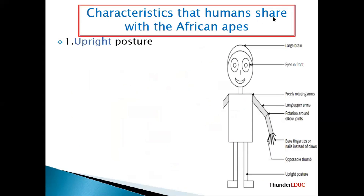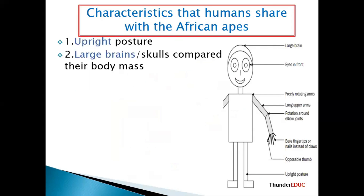The characteristics of humans shared with other African apes: number one, upright posture — we stand upright. Number two, a large brain. We have a large brain compared to other animals like dogs. The key point is that brain size is compared relative to body size. Our brain is large relative to our body. The elephant has a big brain, but relative to its body size, its brain is actually quite small.